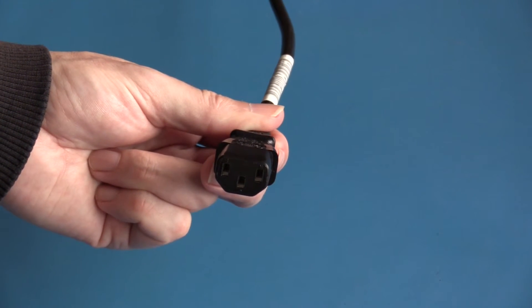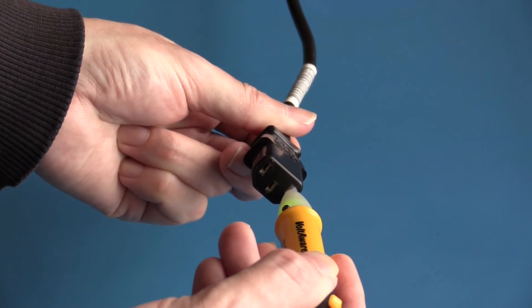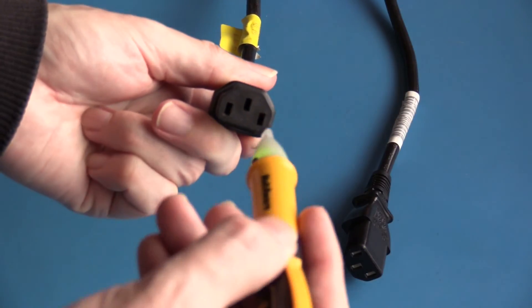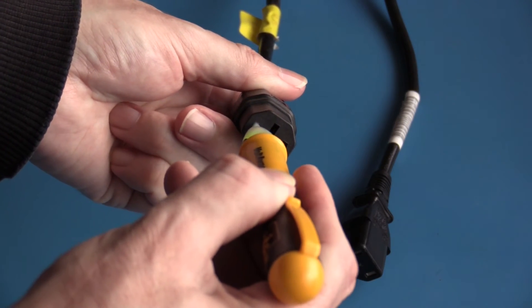Finally, as a demonstration, Ideal Industries Volt Aware non-contact voltage tester. This is the first power cord indicating that voltage is present. And this is the other power cord. Again, there's no indication of any voltage present.